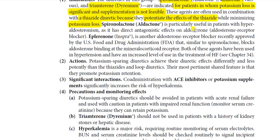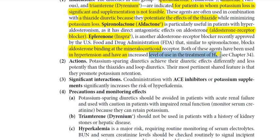Spironolactone is particularly useful in patients with hyperaldosteronism. It has a direct antagonistic effect on aldosterone, making it an aldosterone receptor blocker. Eplerenone is another aldosterone receptor blocker recently approved by the U.S. FDA, similar to spironolactone, that blocks aldosterone binding to the mineralocorticoid receptor. Both agents are used in hypertension and have increased importance in the treatment of heart failure.